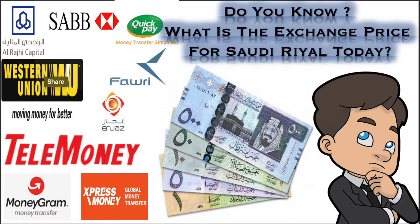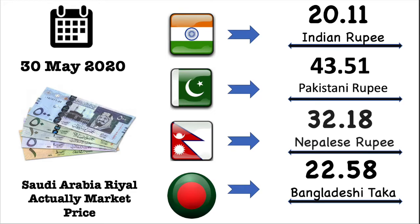We also update the daily currency exchange value of Saudi Arabia. Now we are seeing the exact market exchange value for each country. Today's date is the 30th of May 2020. Indian Rupees market exchange value is 20.11. Pakistan Rupees market exchange value is 43.51. Nepal Rupees market exchange value is 32.18 Nepalese Rupee. Bangladesh market exchange value is 22.58 Bangladesh Taka.